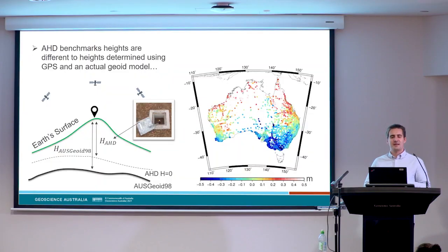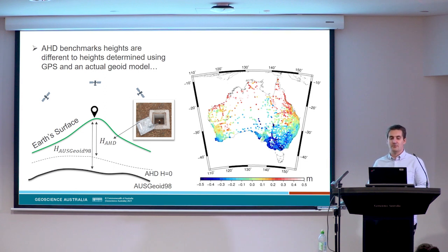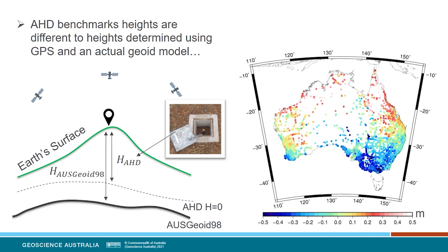When AusGeoid 98 was put together, the idea was that you should be able to use the model with GPS data and get a height that matched up very closely with the Australian Height Datum heights — the heights determined by levelling in the 70s. But something a bit funny happened when the AHD heights on benchmarks were compared to heights determined using GPS and the AusGeoid 98 model. In principle they should be almost the same, but when compared, the differences have a range of around one metre and this weird overall north-south trend.